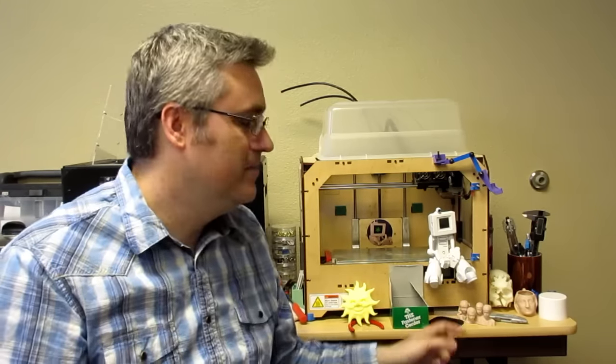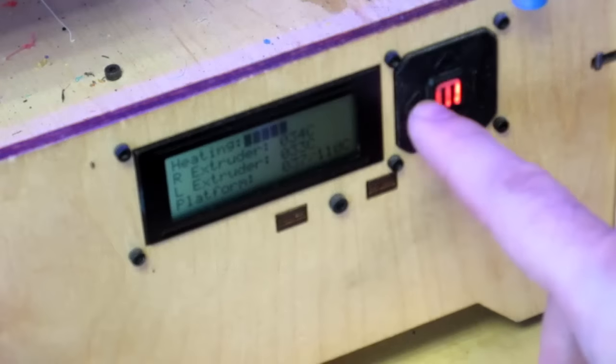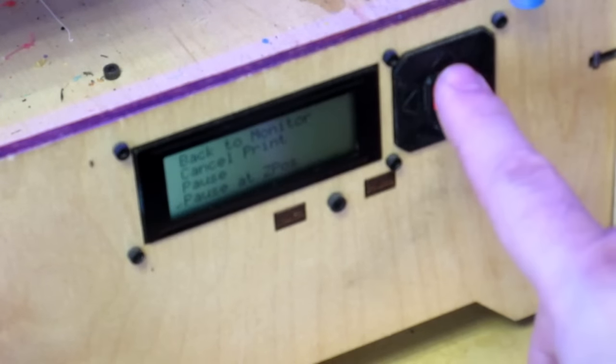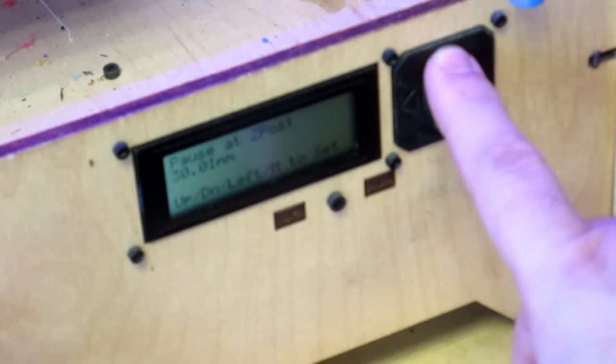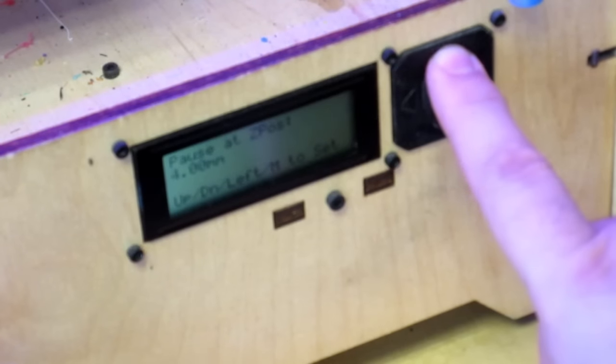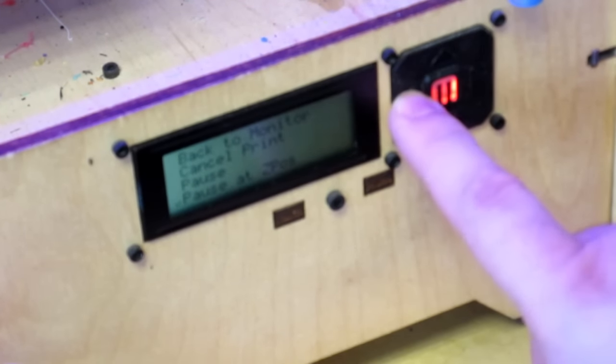Then I programmed my print to stop at the right spot during the print, which in the case of this print was at the four millimeter mark. And the way that I did that was by navigating the menus in Sailfish. Now your 3D printer may or may not have this same ability.